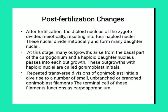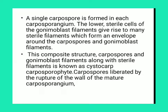At this stage, many outgrowths arise from the basal part of the carpogonium, and haploid daughter nuclei pass into each outgrowth. These outgrowths with haploid nuclei are called gonimoblast initials. Repeated transverse divisions of the gonimoblast elements give rise to a number of small unbranched and branched gonimoblast filaments, and the terminal cell of each filament functions as a carposporangium.